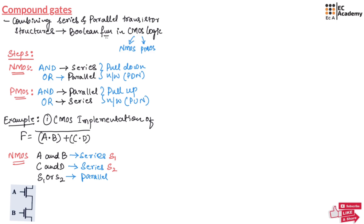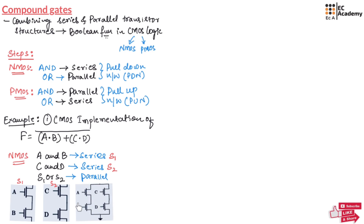We take NMOS transistors and connect A and B in series to form S1, then take C and D two NMOS transistors connected in series to form S2. Between S1 and S2 there is an OR operation, so we need to connect these two in parallel, with the NMOS network connected to ground. So we have implemented S1, implemented S2, connected S1 and S2 in parallel, and these are in turn connected to ground. This is the NMOS implementation of the given Boolean function.